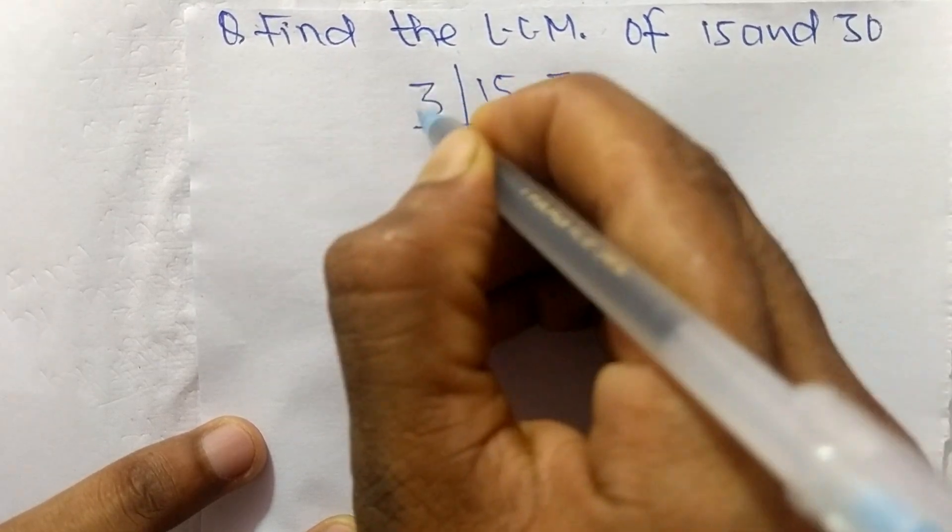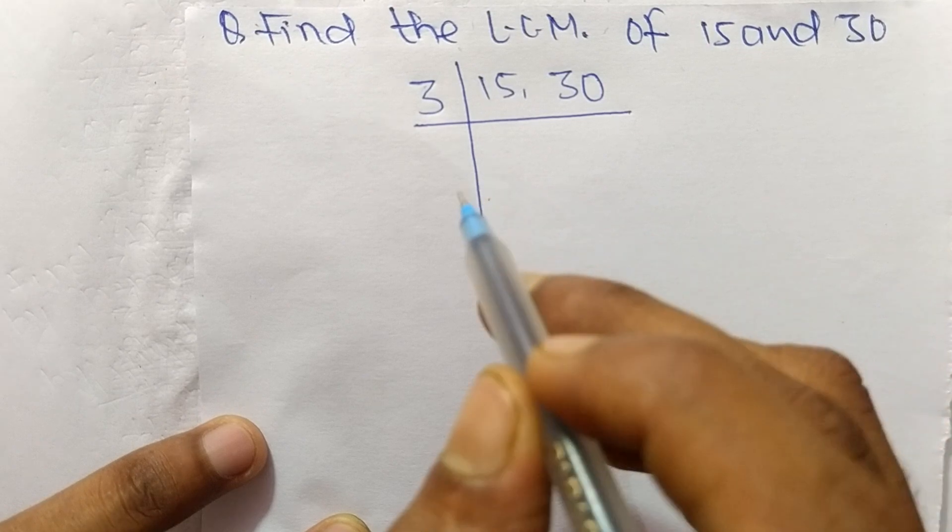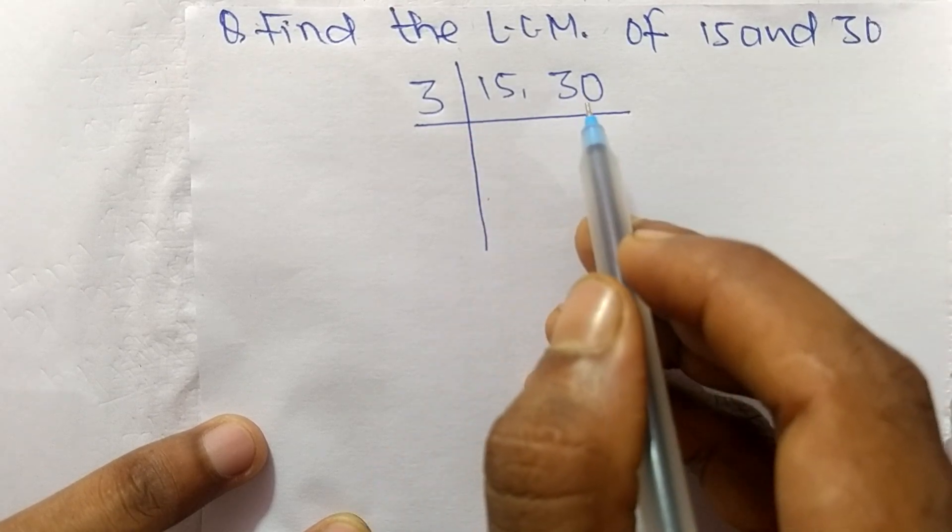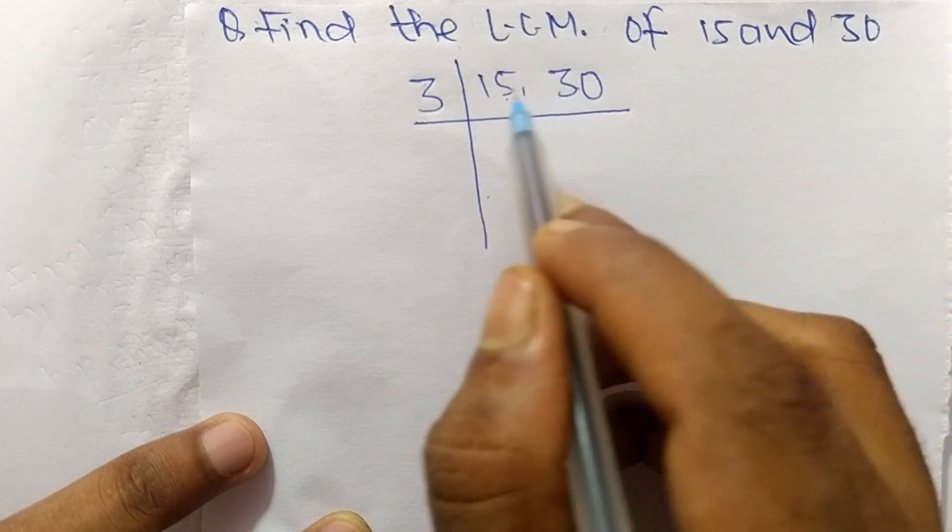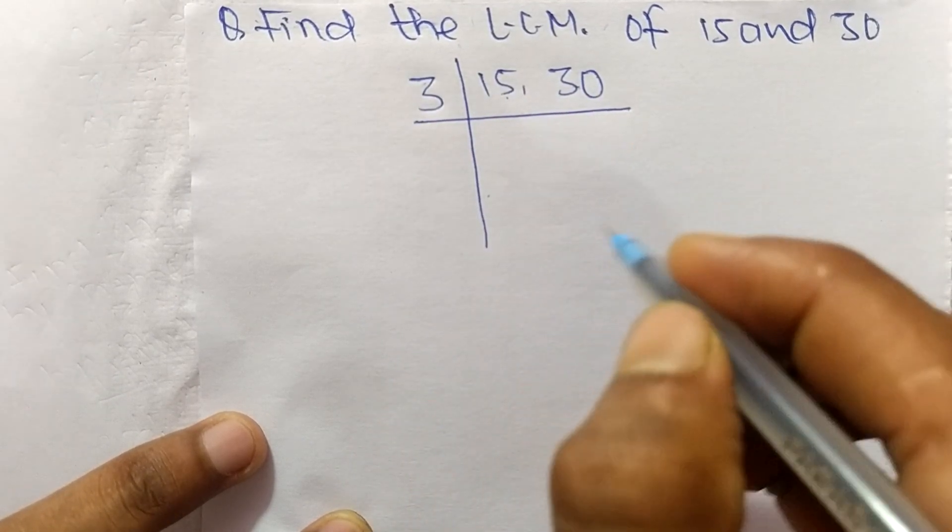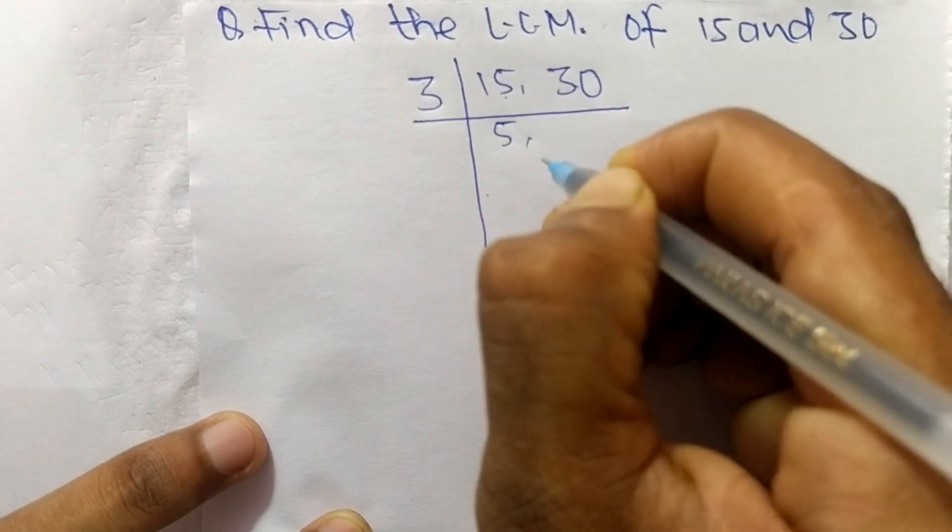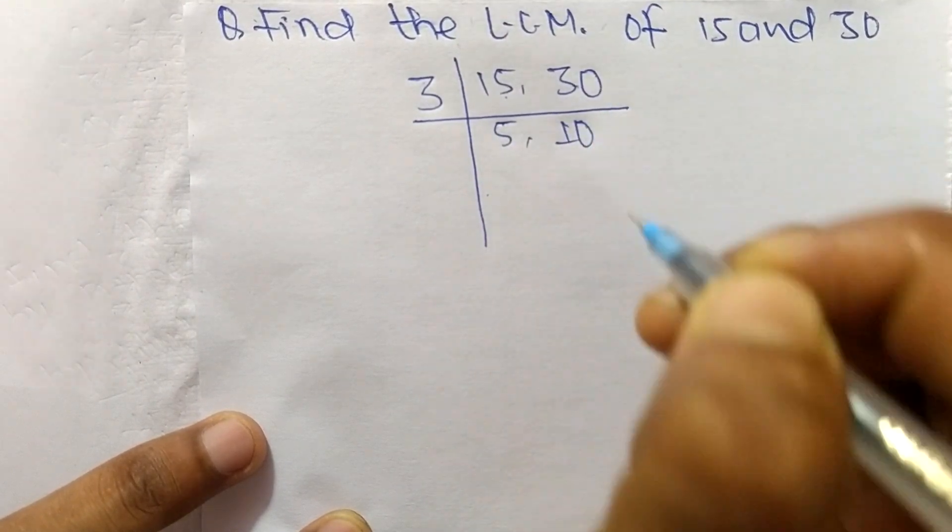The number we get is 3. When we take 2, it can divide 30 but can't divide 15, so we take 3 which can divide both 15 and 30. 3 times 5 means 15, and 3 times 10 means 30.